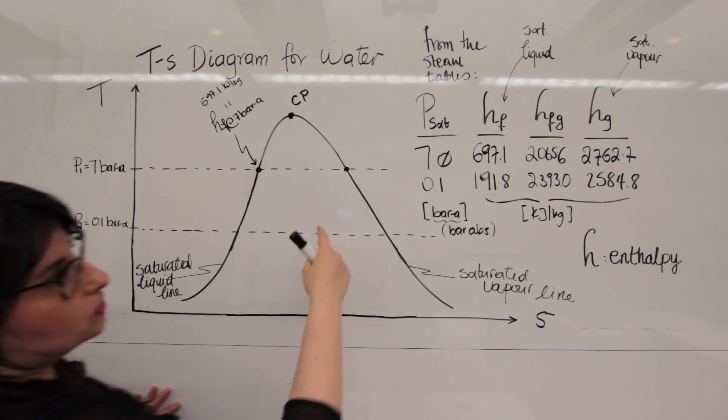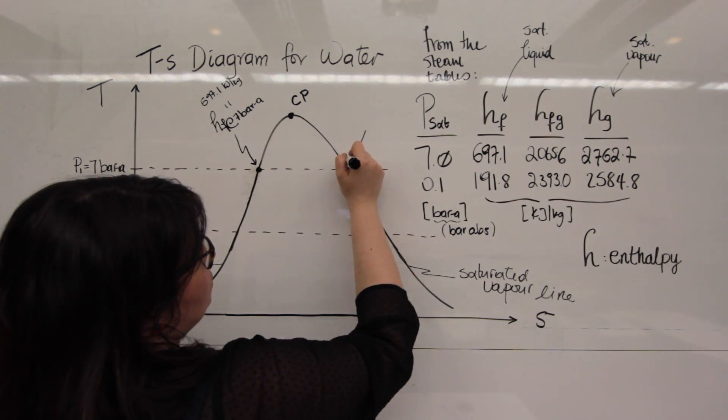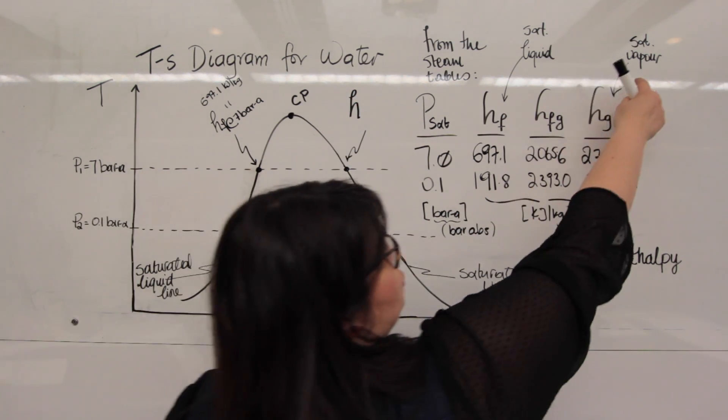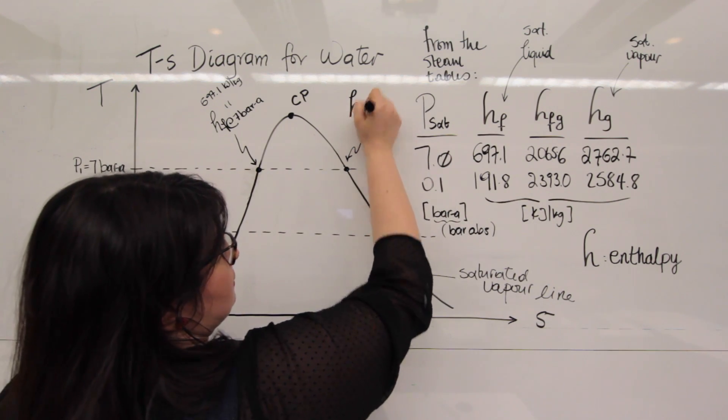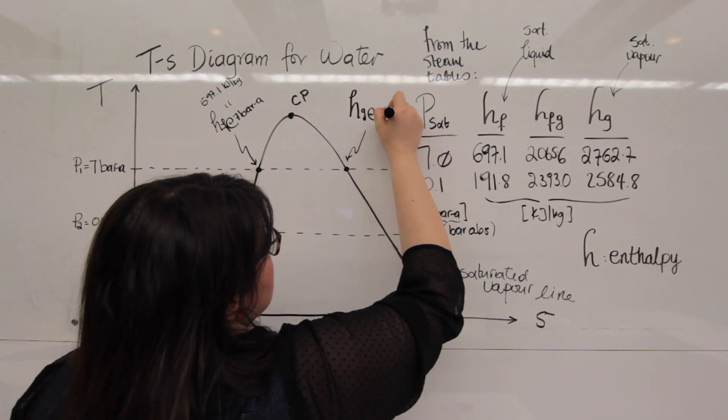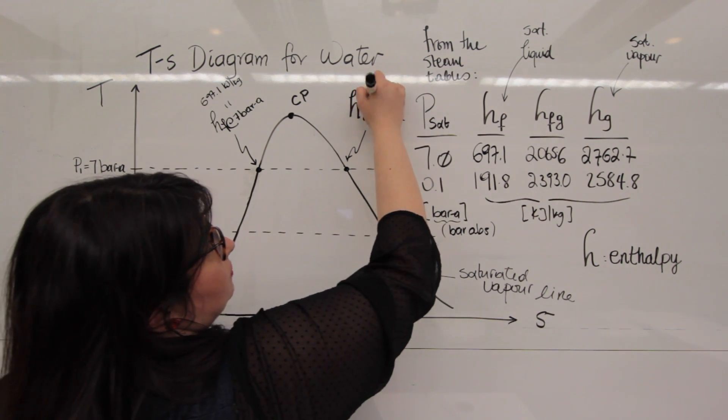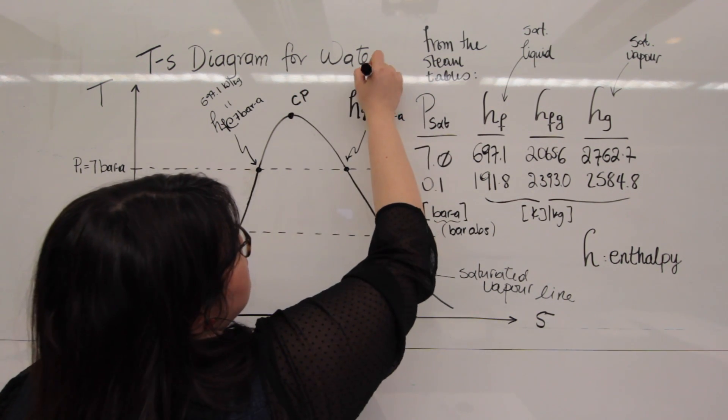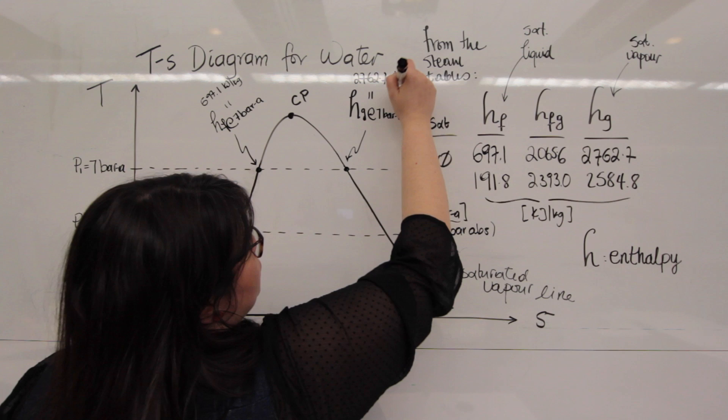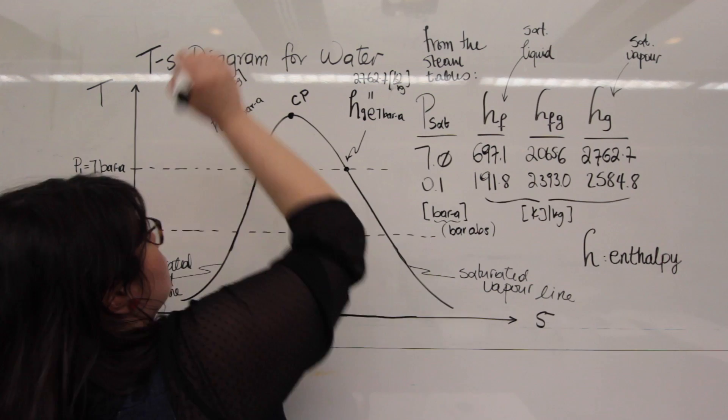So, moving on to the next point. Here, we have the saturated vapor line. So, in a similar way, if I want to denote this point, the enthalpy, I'm going to use H. Now, because I have saturated vapor, I will use G as my subscript. And I know that it's at the 7 bar pressure. That would be at 7 bar A. And if I read that from my table, then that would be equal to 2762.7. What? Kilojoules per kilogram. Perfect.